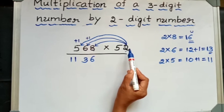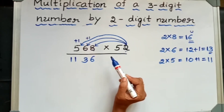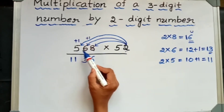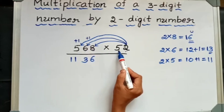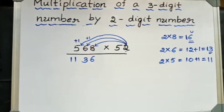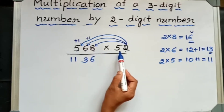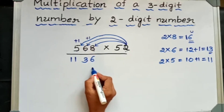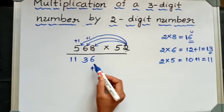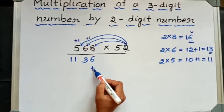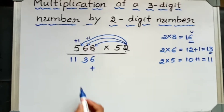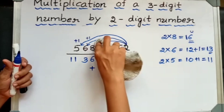Now it is the time to multiply 568 by 5. Before multiplying 568 by 5, I will write the addition symbol exactly below this 6. Now let's multiply 568 by 5.